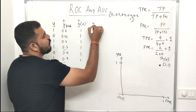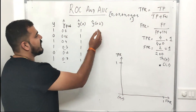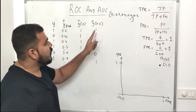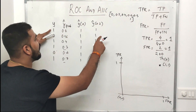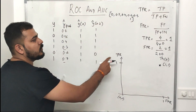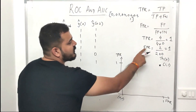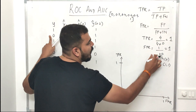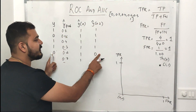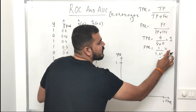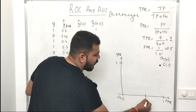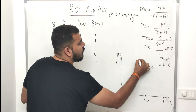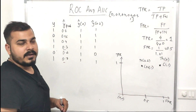Now let me take the next threshold value of 0.2. Anything greater than 0.2 becomes 1, so y_hat values are: 1, 1, 1, 1, 0, 1. The true positive rate is again 4 out of 4, which is 1. For false positive rate: there is only 1 false positive now, and 1 true negative, so FPR equals 1 divided by 1 plus 1, which is 0.5. This plots at (0.5, 1).